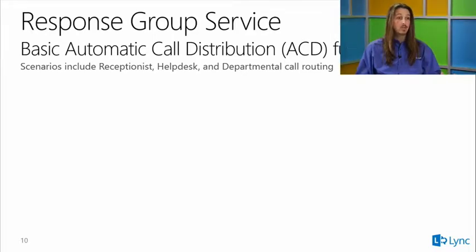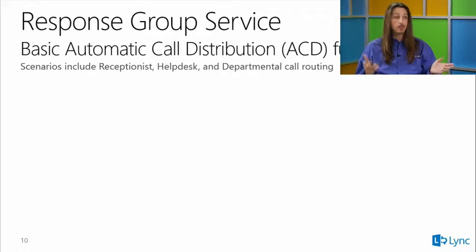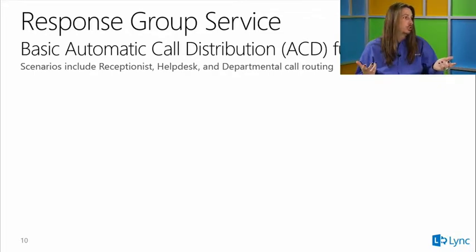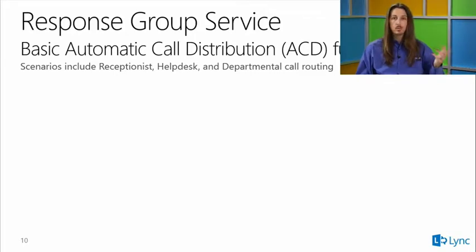If a call came into the main location and was unavailable, after a set time it would ring the Chicago office, who could route the call just like the primary receptionist. You can bounce calls all over the world if needed, enabling departmental or receptionist-based call routing.